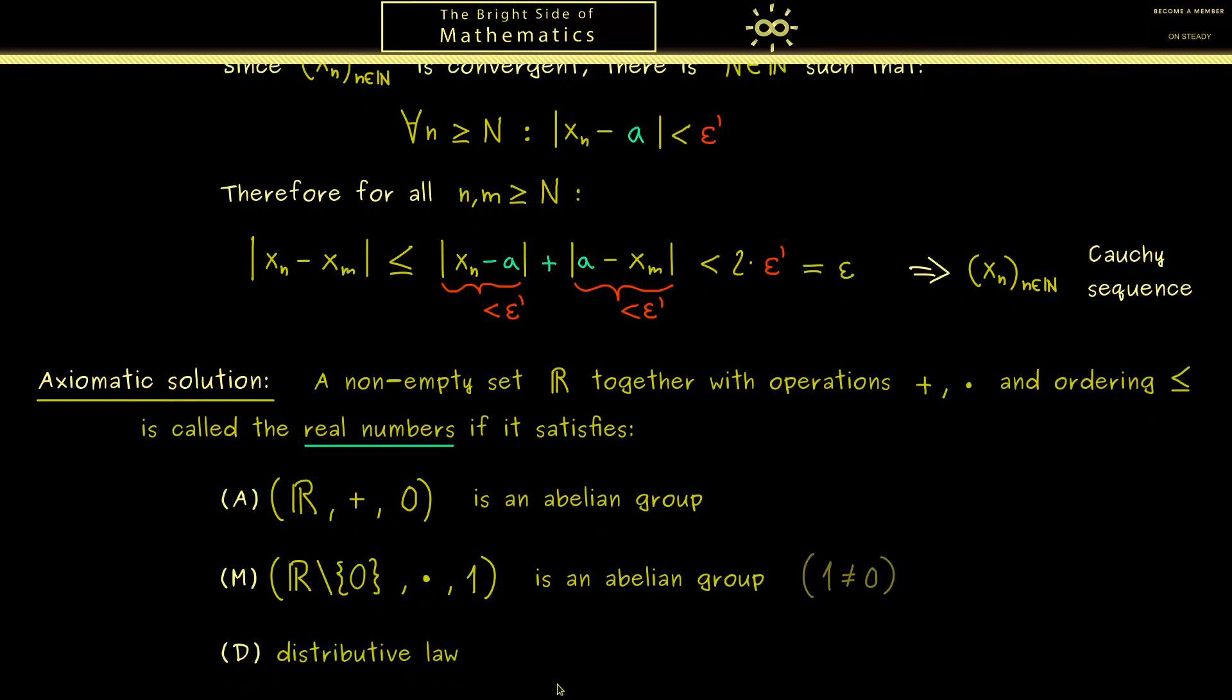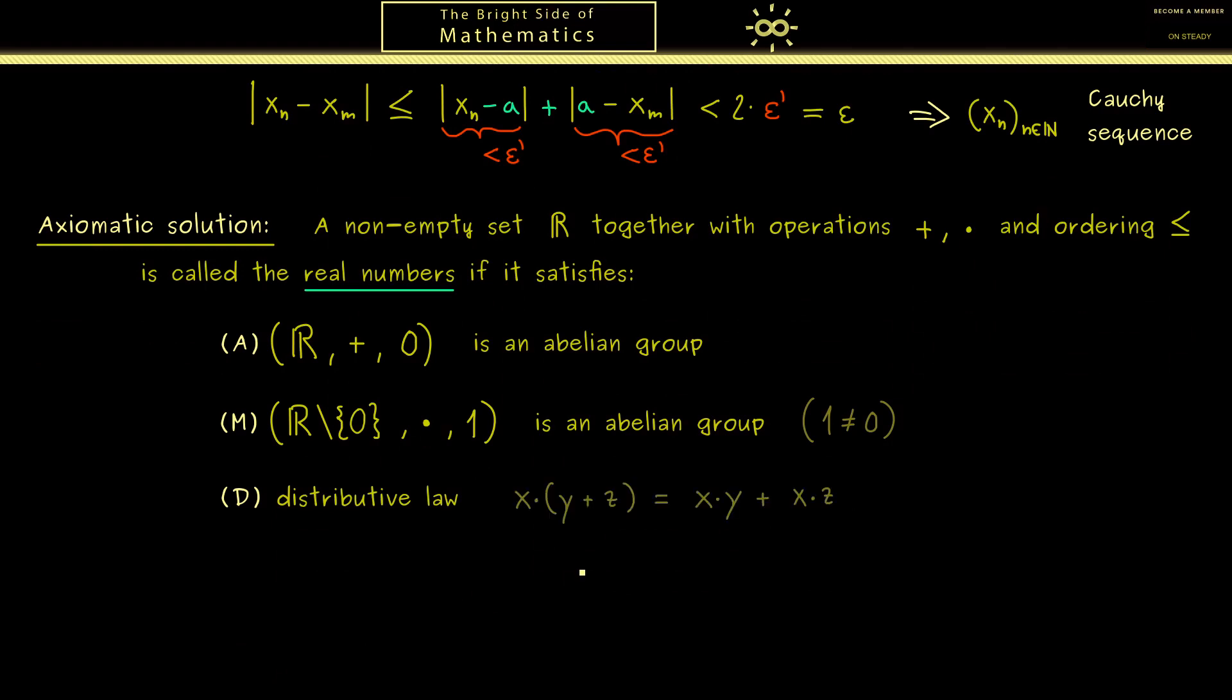Okay, then the third rule I call (D) for distributive law. This is the same as always, it just connects multiplication and the addition. So at this point you already know these three rules together we call a field. Okay, then next I want to put everything about the order into (O). So we have all the properties of an ordering, it's also a total order and also compatible with the operations plus and times. And in addition we also have the so-called Archimedean property. So now because you are very observant, you know all these rules are fulfilled by the rational numbers ℚ. So you can watch all my videos where I talk about these properties.